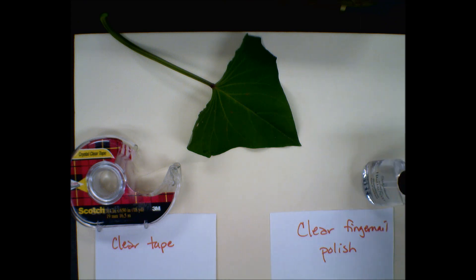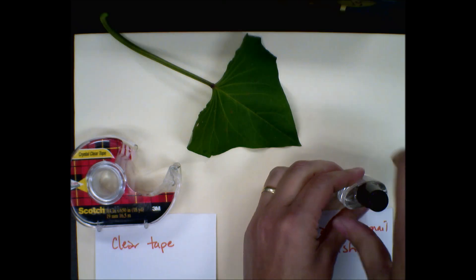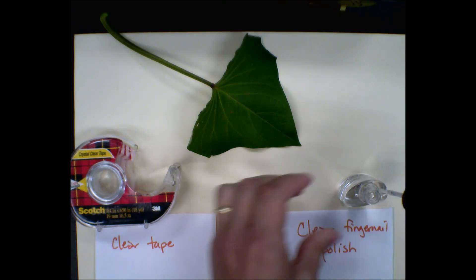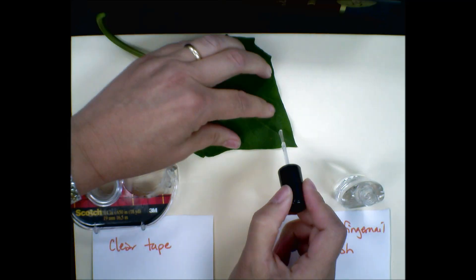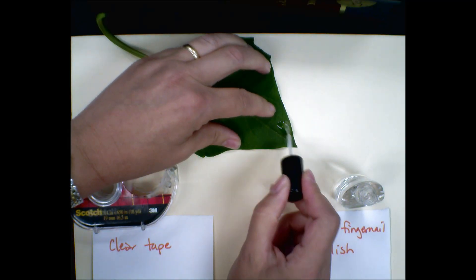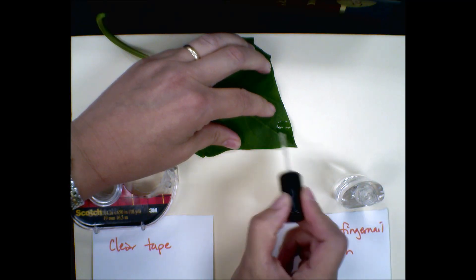So that's why we have some clear fingernail polish and some tape. What we'll do is put the clear fingernail polish just on a small portion of the leaf, and it doesn't need to be a thick coat because we want it to be thin enough that it'll go into the nooks and crannies on the surface of the leaf.